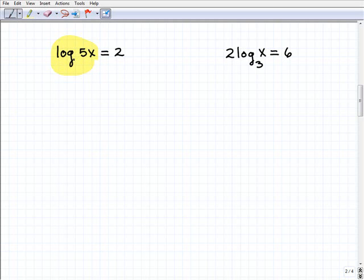This is a common log. It's just log, but it's always implied that there's that base 10 down there. So this is going to be 10 squared equals 5x. That's the equivalent exponential form of this log equation. So this should be pretty straightforward to solve for most of you out there. 10 squared is 100, so 5x equals 100. x will be equal to 20. That's a nice, simple problem to get us going.